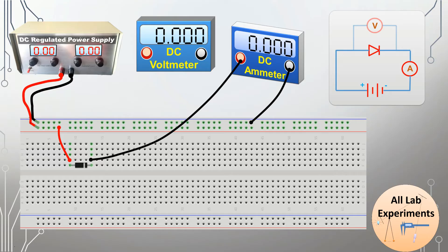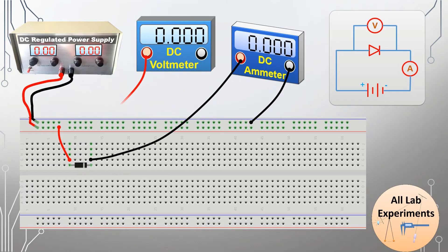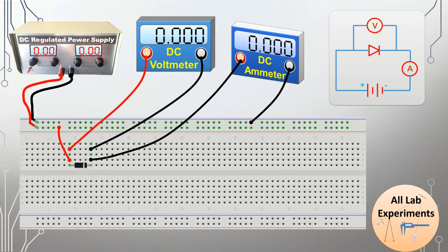As we can see in the diagram, the voltmeter is in parallel with the diode. So we connect the voltmeter in parallel — the positive of the voltmeter to the P side and the negative of the voltmeter to the N side.